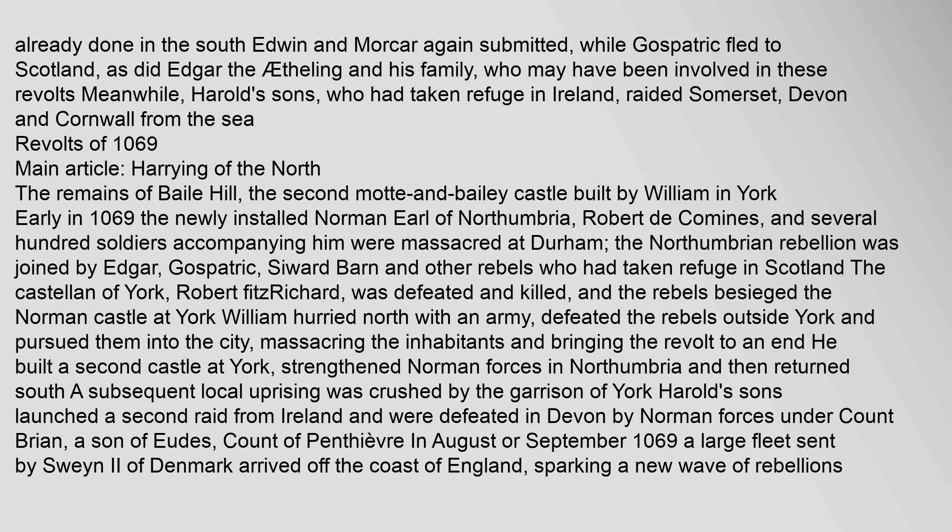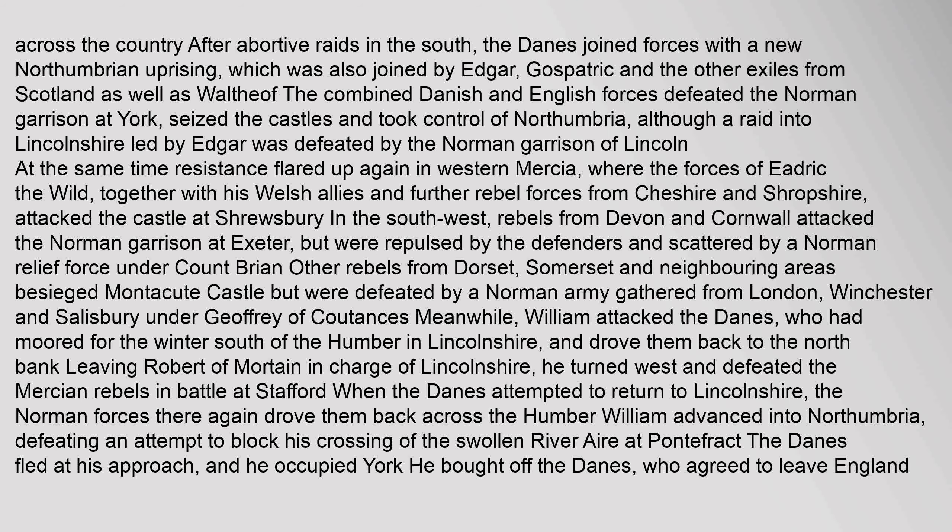Harold's sons launched a second raid from Ireland and were defeated in Devon by Norman forces. In August or September 1069, a large fleet sent by Swein II of Denmark arrived off the coast of England, sparking a new wave of rebellions across the country. After abortive raids in the south, the Danes joined forces with a new Northumbrian uprising, which was also joined by Edgar, Gospatric and the other exiles from Scotland, as well as Waltheof. The combined Danish and English forces defeated the Norman garrison at York, seized the castles and took control of Northumbria. At the same time, resistance flared up again in western Mercia, where the forces of Edric the Wild, together with his Welsh allies, attacked the castle at Shrewsbury.